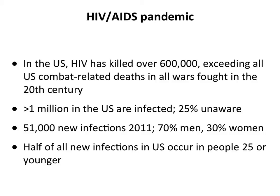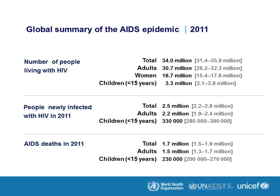In the US, HIV/AIDS has killed more than 600,000 people - more than all the wars of the 20th century. Right now a million or more people are infected in the US; a quarter of them don't know it, so they may spread it. There were 51,000 new infections in 2011 - many men, some women - and half were in fairly young people.